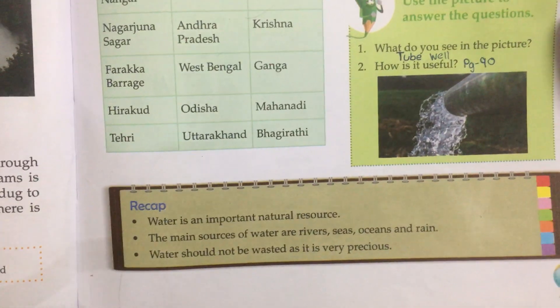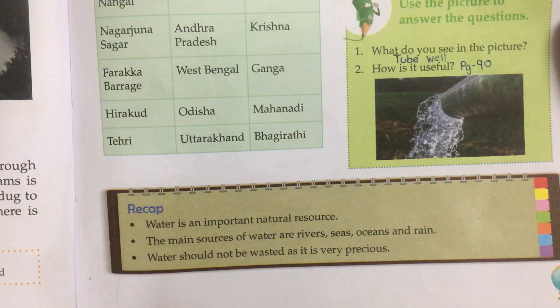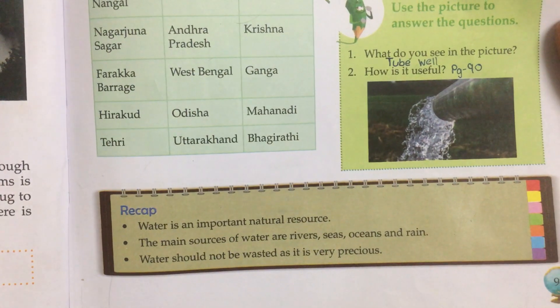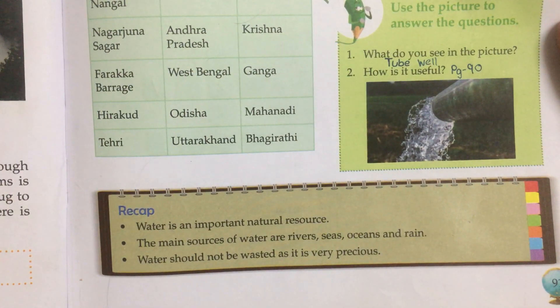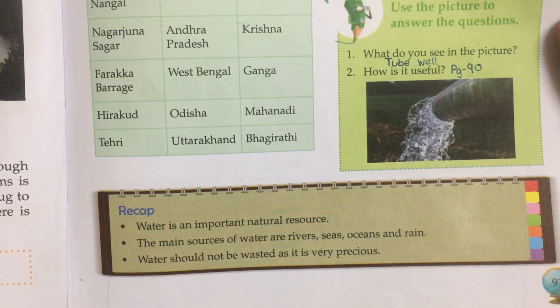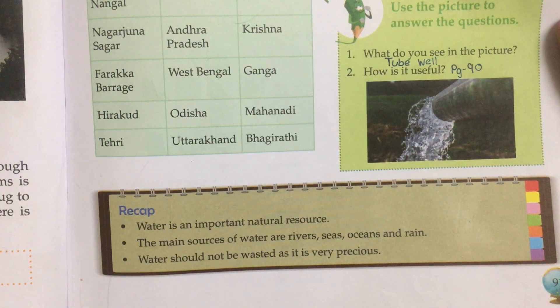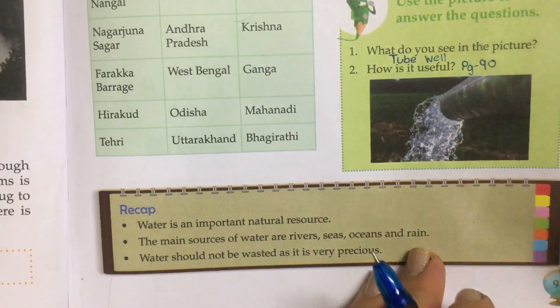Now, recap. Water is an important natural resource. The main sources of water are rivers, seas, oceans and rain. Water should not be wasted as it is very precious.